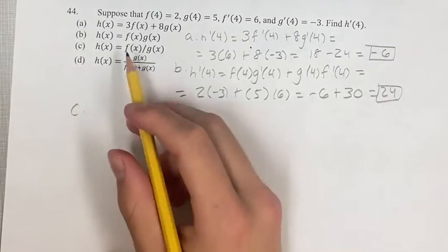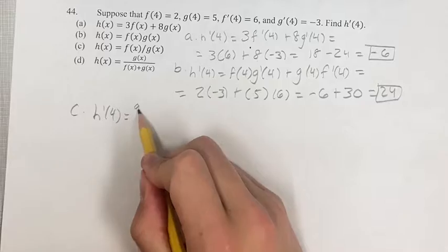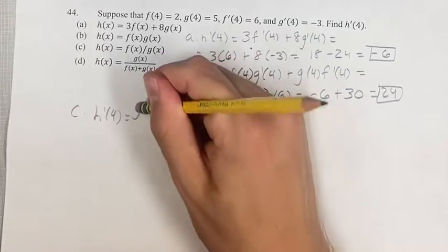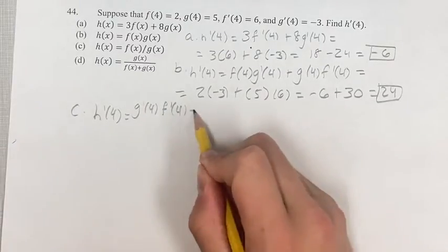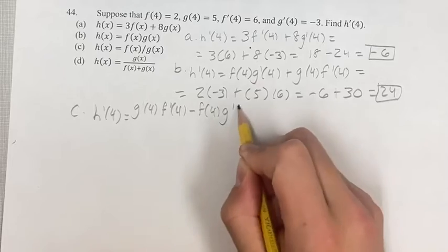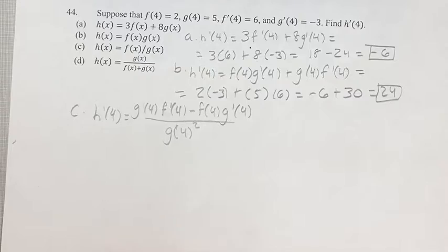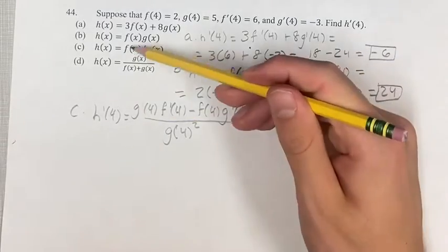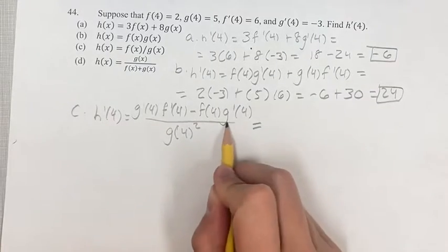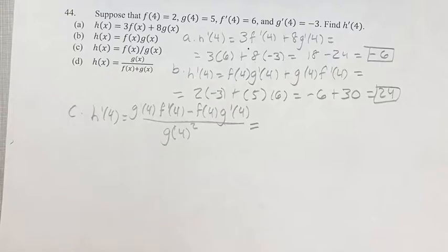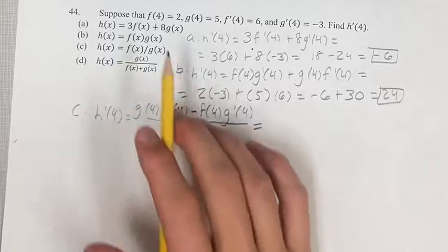For part c, we have a fraction here, so we can use the quotient rule. So h prime of 4 equals the denominator times the derivative of the numerator, minus the numerator times the derivative of the denominator, all over the square of the denominator — where g is the denominator and f is the numerator. It's a little bit different because we're not plugging in explicit functions like f of x equals 2x plus 4 or whatever.